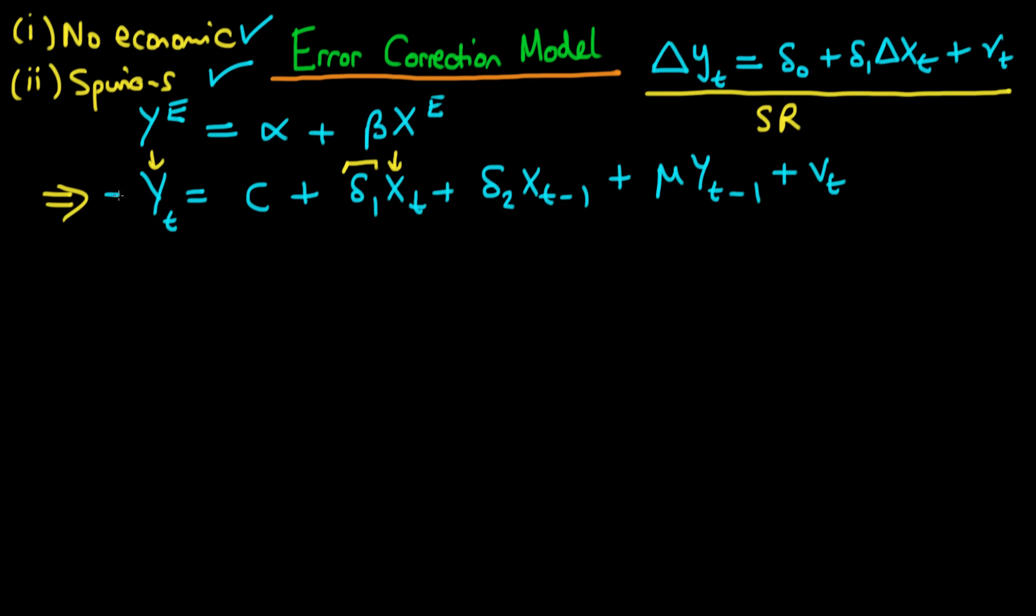So the idea is that we start with this model here and then to begin with all we do is we take our yt and we take off yt minus 1. So the right hand side just stays the same so I have c plus delta 1 times xt plus delta 2 times xt minus 1.